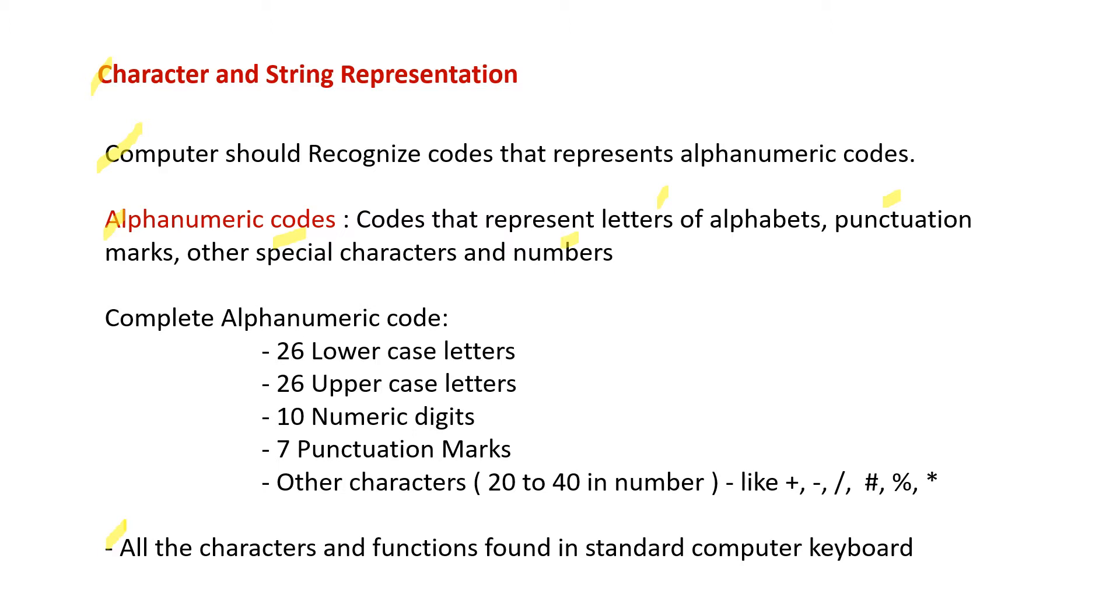The complete list of alphanumeric code includes 26 lowercase letters, 26 uppercase letters, 10 numeric digits, 7 punctuation marks, and 20 to 40 other characters like the addition sign, subtraction sign, backslash, forward slash, etc.